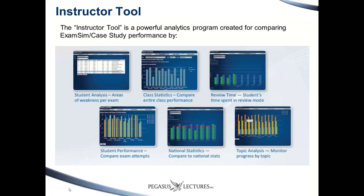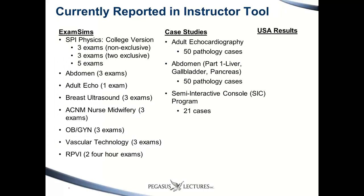What currently goes into the instructor tool: the USA results, the exam sims — SPI physics, abdomen, adult echo, breast, nurse midwifery, OBGYN, vascular technology, and RPVI — and the case studies for adult echo, abdomen, and semi-interactive consult questions. If you're using exam sims, case studies, or the USA results, it automatically goes into your instructor tool. You don't have to do anything special — it's simply by use of these materials that you get access to this analysis program.